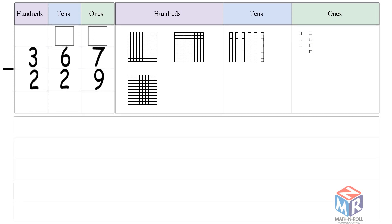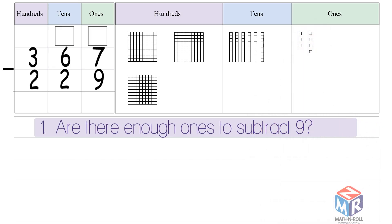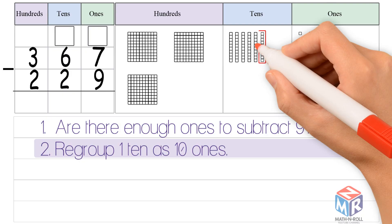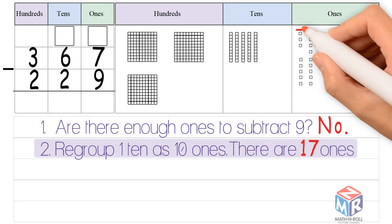First, we subtract the ones. Are there enough ones to subtract 9? No, you can't subtract 9 from 7. So, we regroup one 10 as 10 ones. There are now 17 ones.